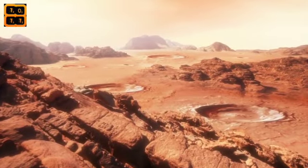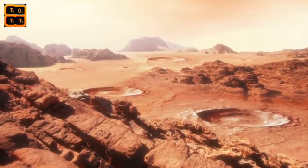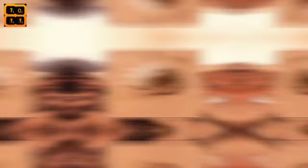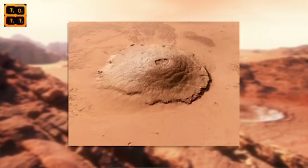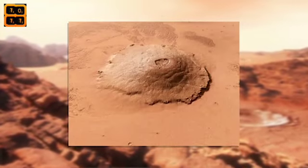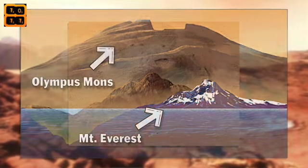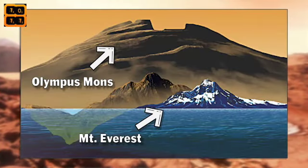But on Mars, thanks to a lack of tectonic plates and no molten planet core, Olympus Mons tops out 16 miles above the surface of the red planet and covers an area nearly the size of France, making it the biggest mountain in our solar system.